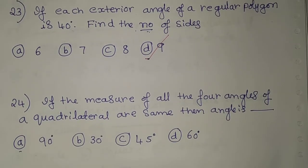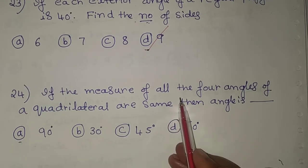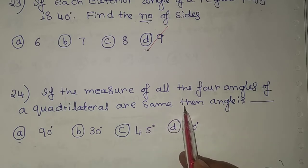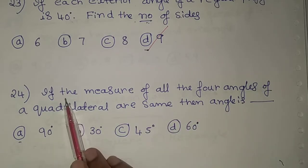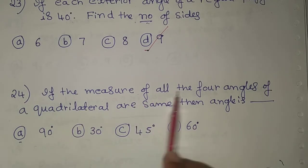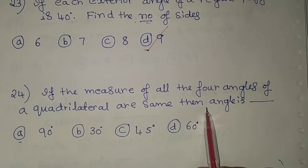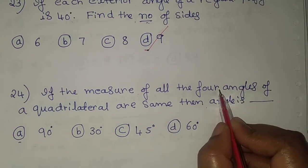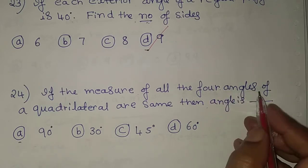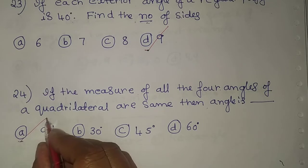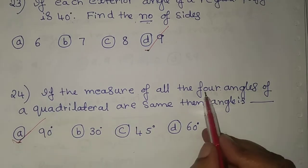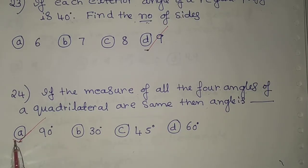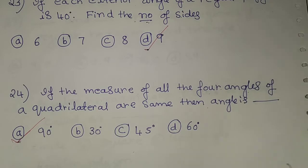The 24th problem: if the measure of all four angles of a quadrilateral are the same, what is the angle? If all four angles of a quadrilateral are equal, the angle must be 90 degrees, since all four angles sum to 360 degrees. Option A, 90 degrees, is the correct answer.